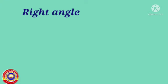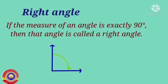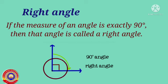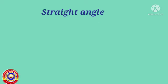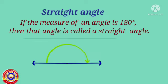First, right angle. If the measure of an angle is exactly 90 degrees, then that angle is called a right angle. A right angle has square corners.